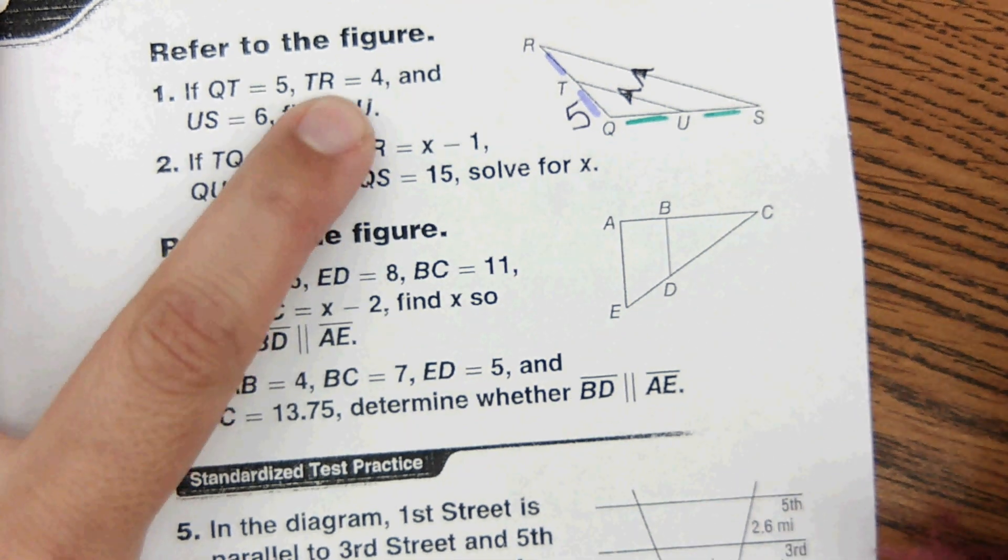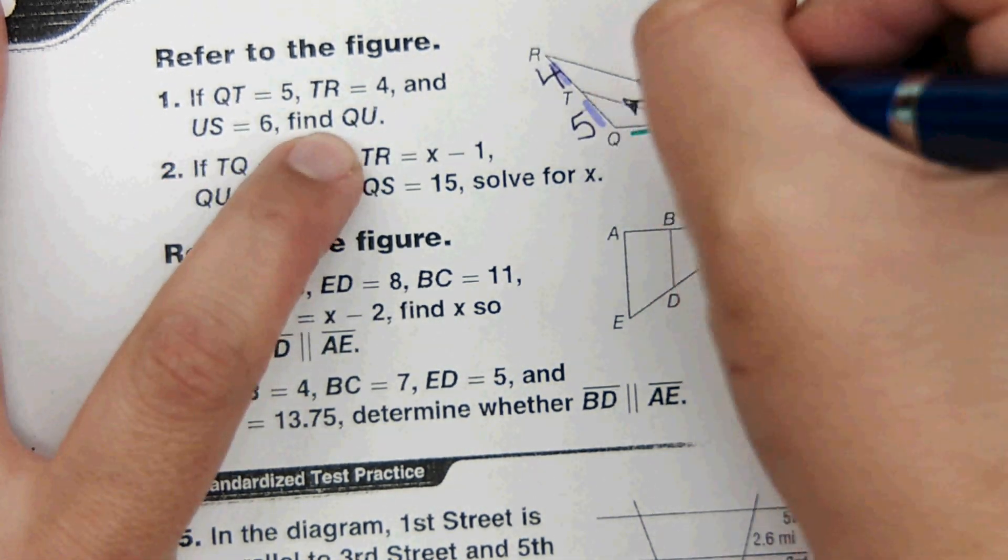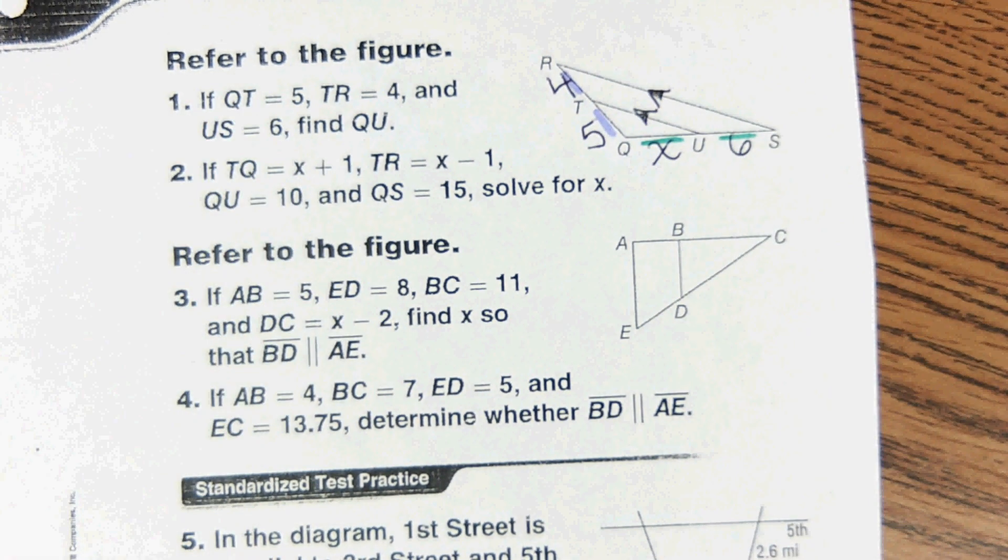Okay, so it says for QT it's five, so this is a length of five. TR is four, US is six, and QU is what we're trying to find, so that's x.